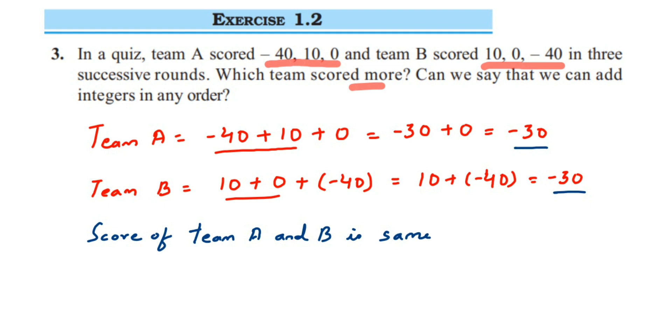The second question they are asking is can we add the integers in any order? So this is the best example. You can see that the sequence of both teams, though the integers are same, but the way of adding, the first integers which we have selected are different, but still we got the same number, -30 and -30. So we can say that yes, we can add integers in any order.